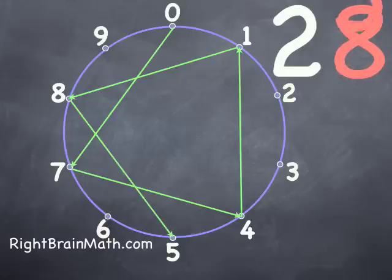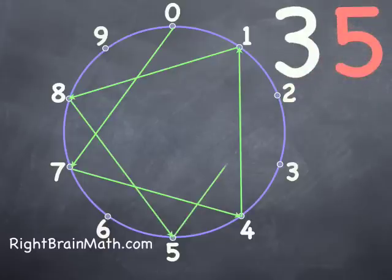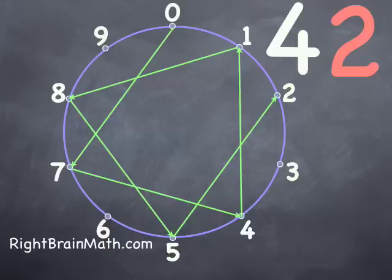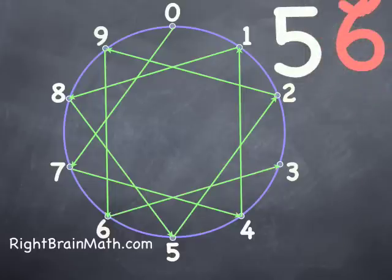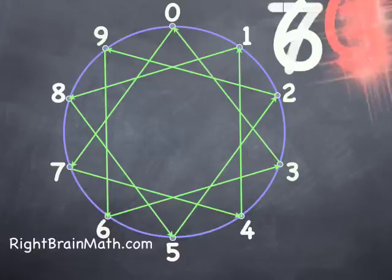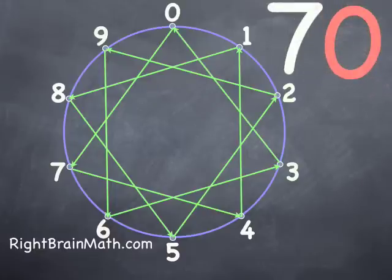Then 35, then 42, then 49, 56, 63, and the last number is back to zero at 70. Again we've created the star. Isn't that fascinating?